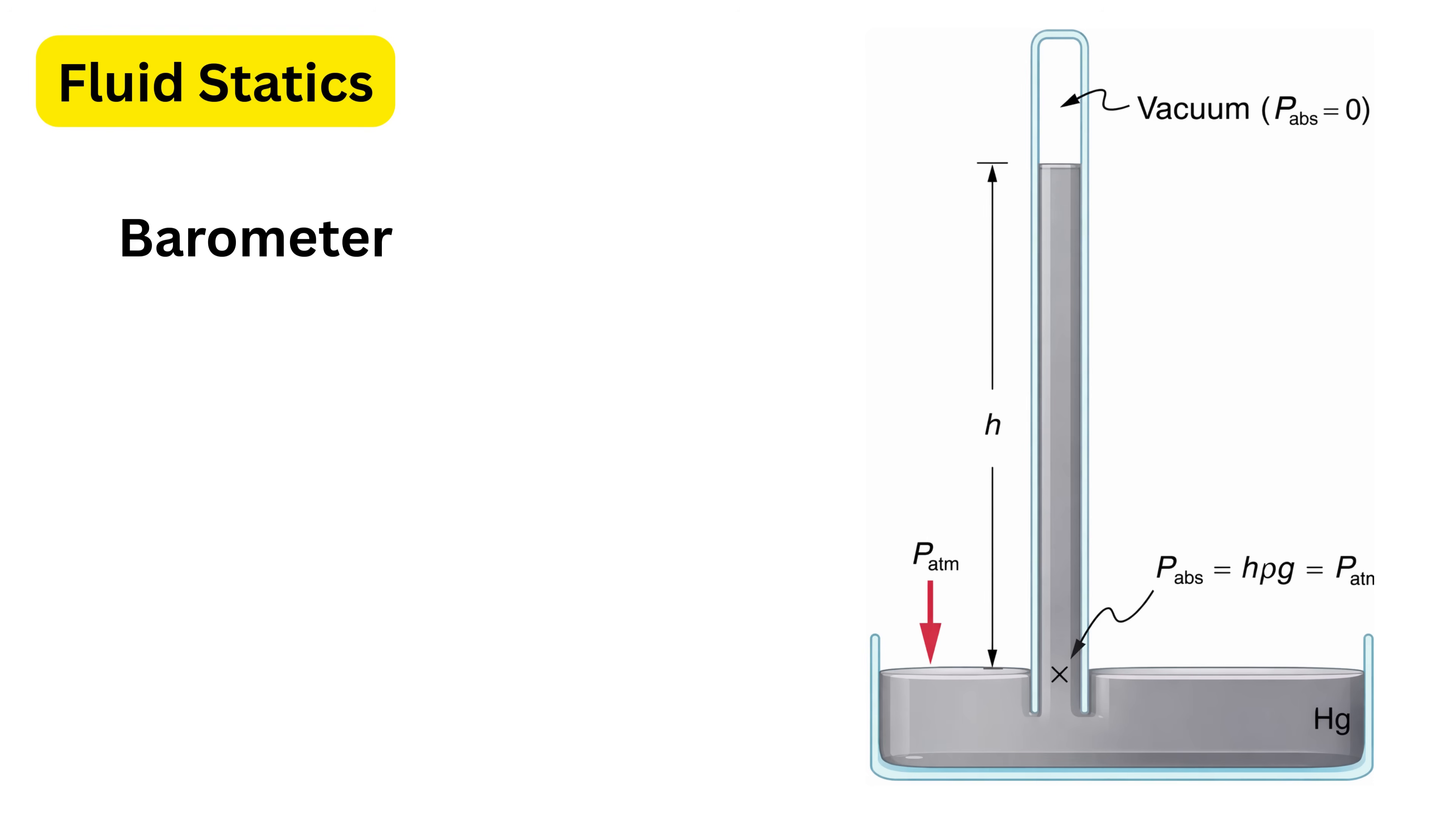Then a barometer is a special instrument used to measure atmospheric pressure. In a barometer, you fill a liquid inside a test tube up to the brim, say mercury, and then invert the tube carefully into a container filled with the same liquid such that no air is trapped inside it.